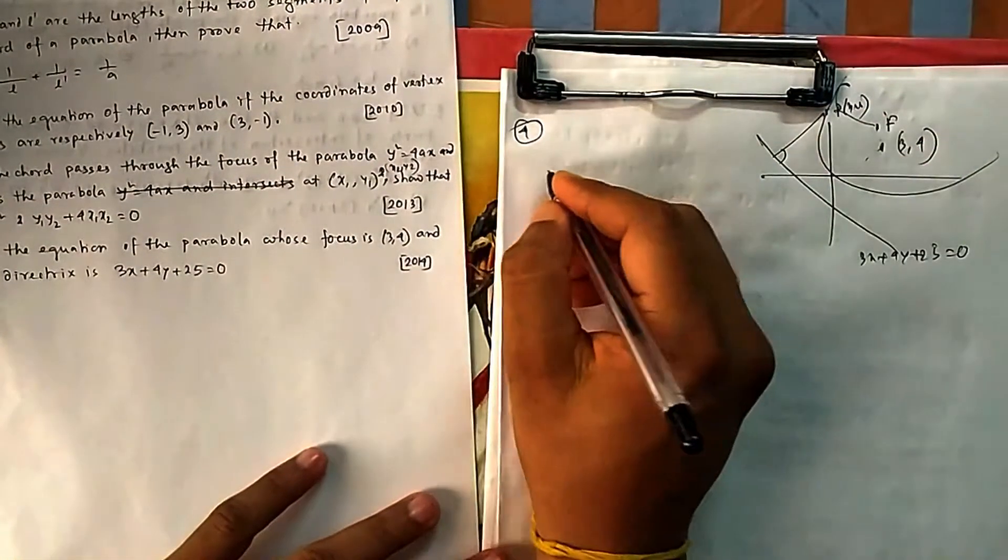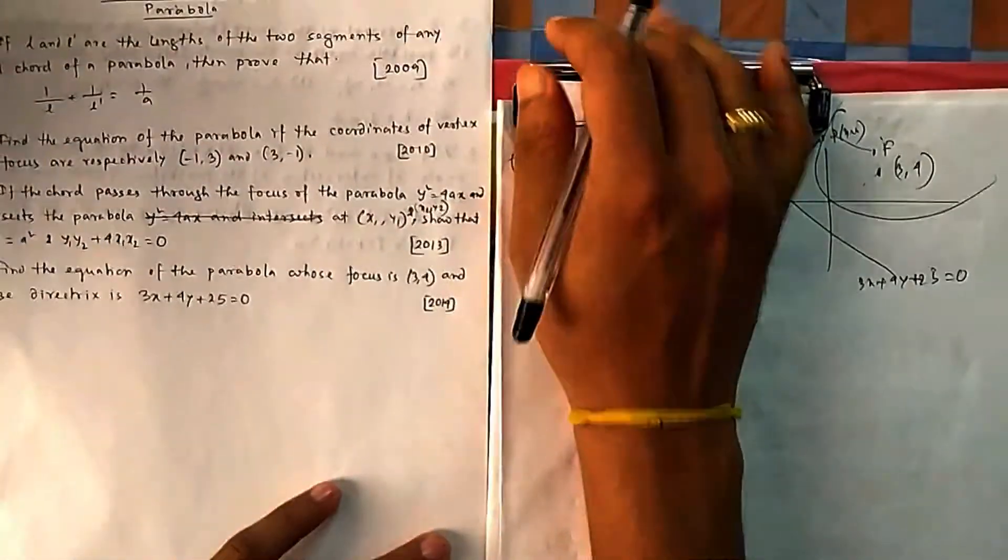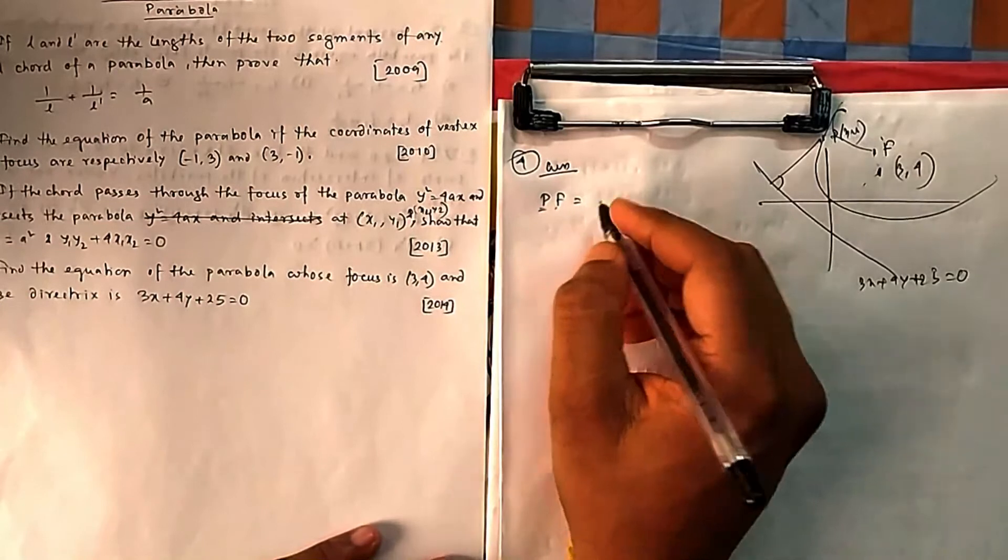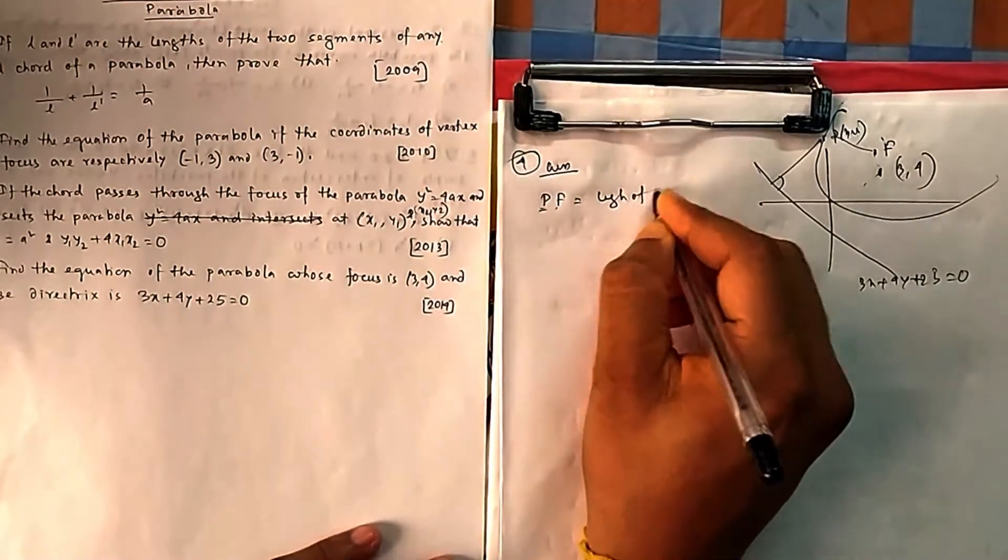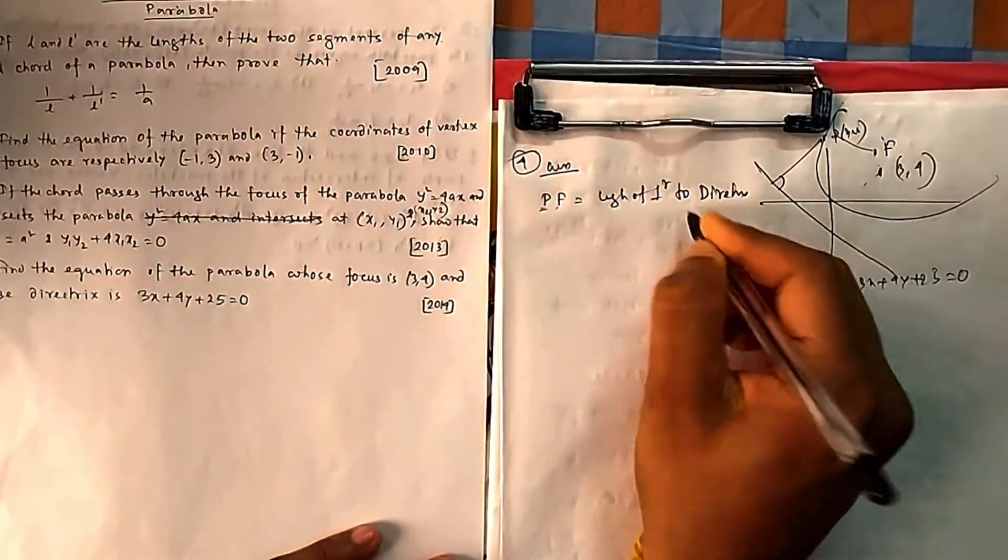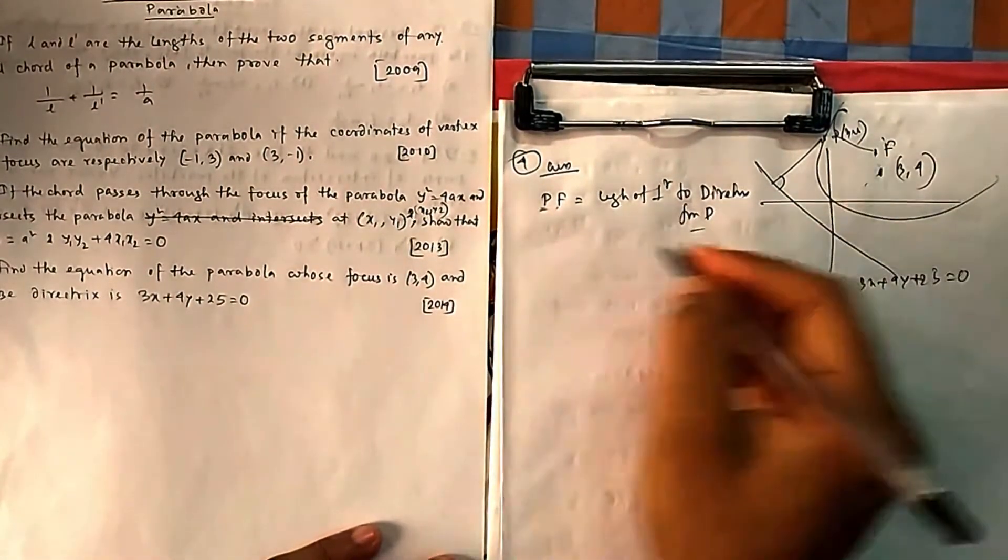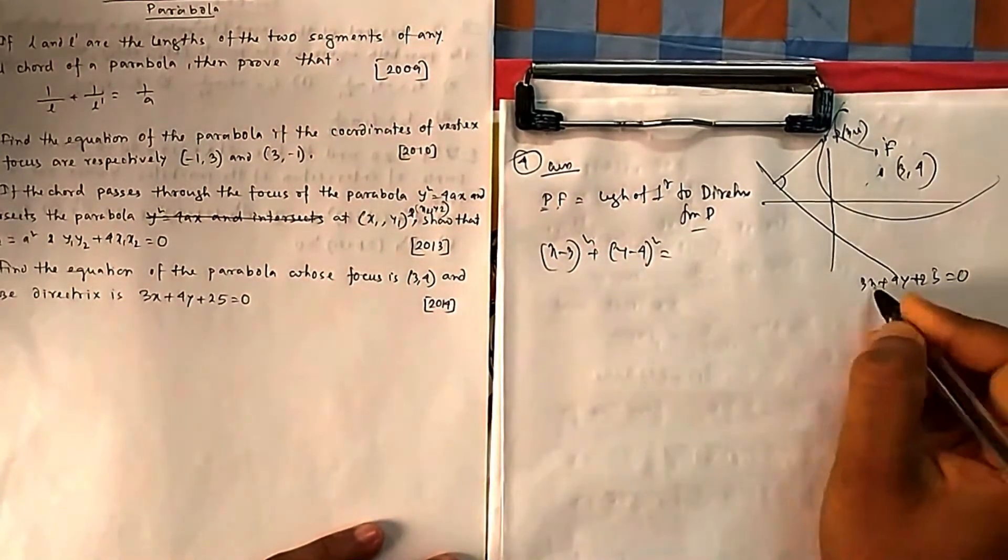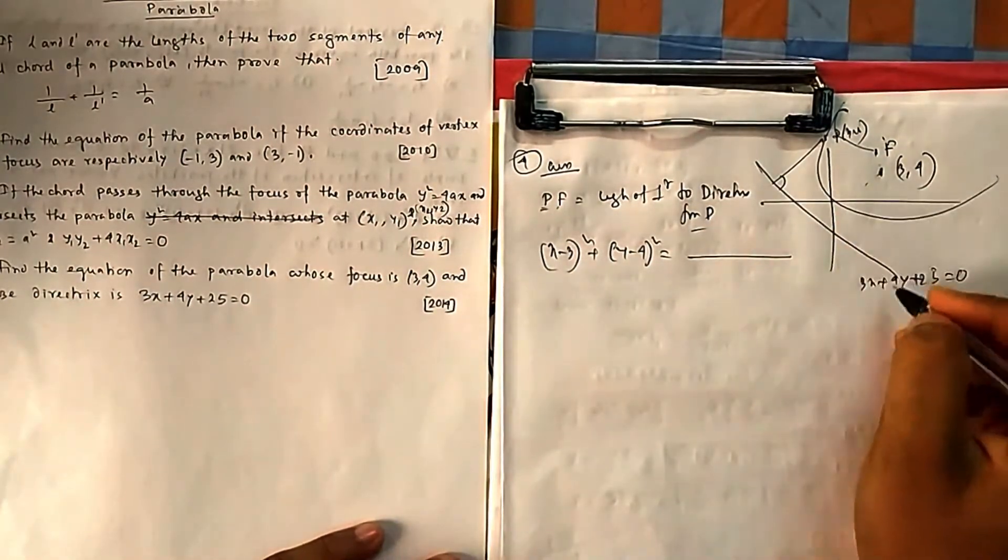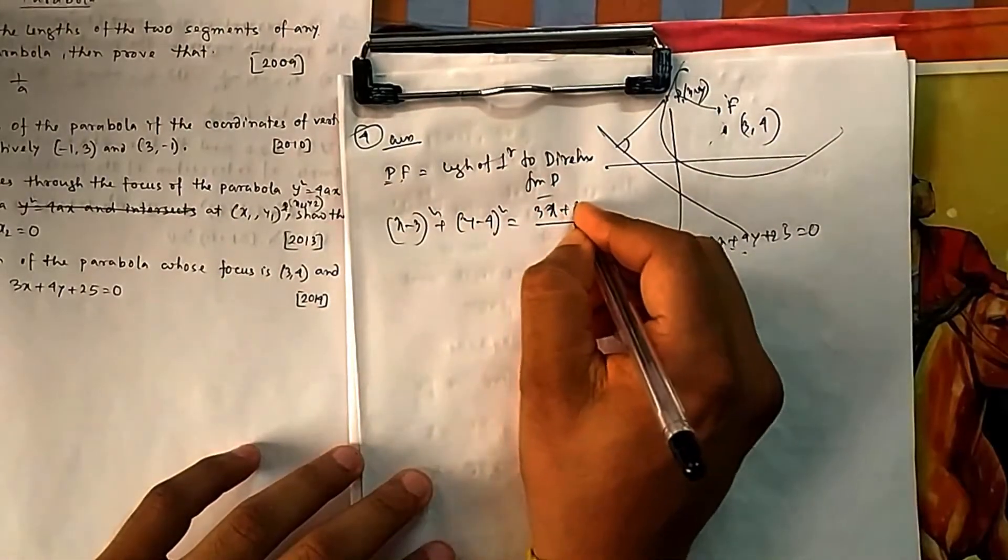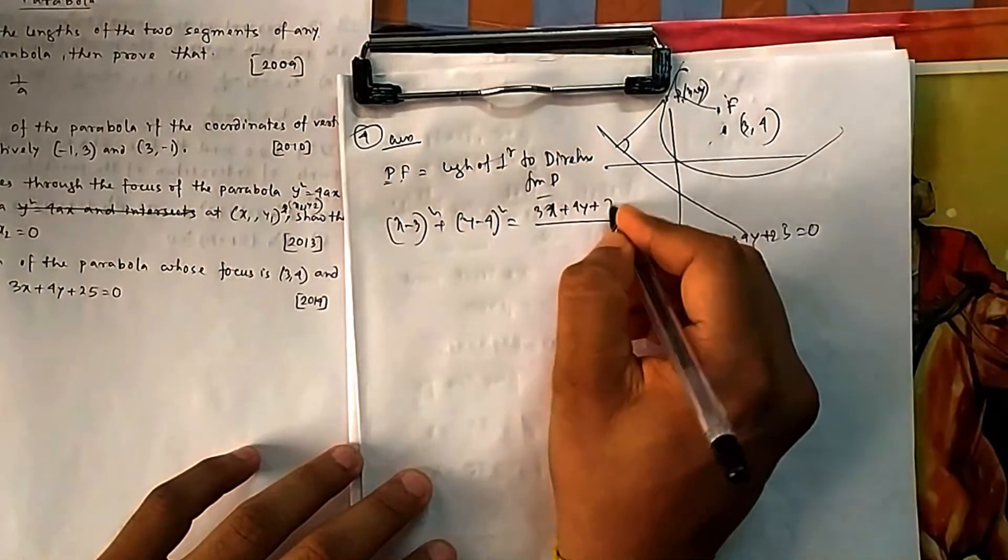So you know PF. So the equation of the parabola will come. We know the distance from the focus to the point on the parabola is equal to length of perpendicular to directrix from P. So what is PF? It is √[(x - 3)² + (y - 4)²] should be equal to - you have to find the distance from this using the point (x, y). So if you put (x, y), it will remain the same, so it will be (3x + 4y + 25)/√(3² + 4²).